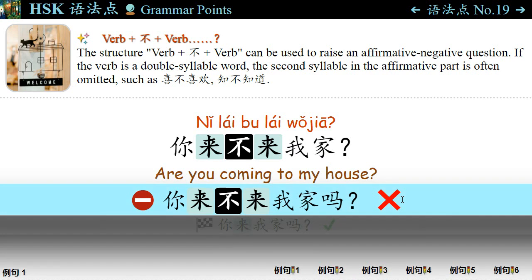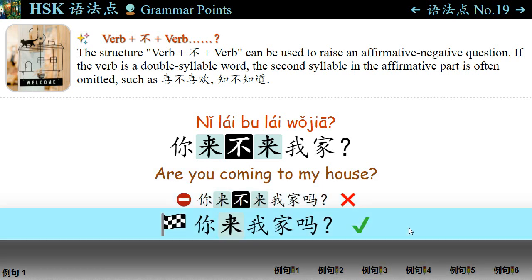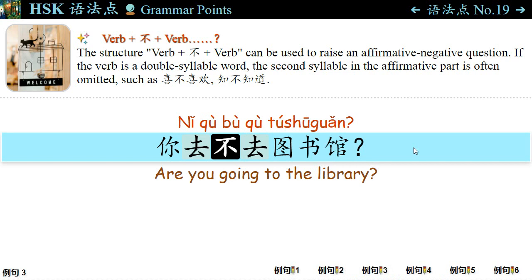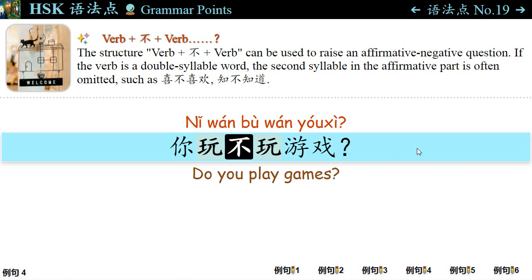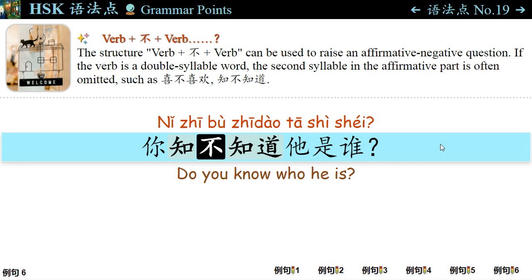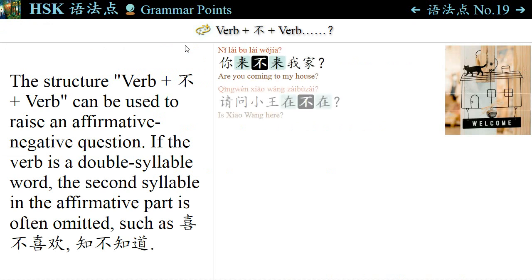语法点十九: Note: 你来不来我家吗 is wrong — the modal particle 吗 cannot be used at the end of an affirmative-negative question. You can ask, 你来我家吗? For example: 请问，小王在不在? — Is 小王 here? 你去不去图书馆? — Are you going to the library? 你玩不玩游戏? — Do you play games? 你喜不喜欢他? — Do you like him or not? If the verb is a double-syllable word, the second syllable in the affirmative part is often omitted, such as 喜不喜欢. 你知不知道他是谁? The pattern is: Verb + 不 + Verb to raise an affirmative-negative question.